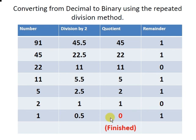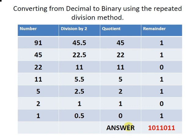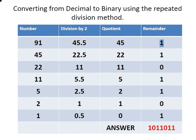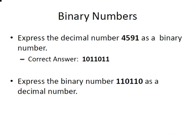This is where we are finished. When we get a quotient value of 0 there is nothing more to bring down to the next phase — that's when we know we have reached the last phase of the repeated division method. The answer is the remainder values read in reverse order, starting from the bottom and working up. So the binary result is 1011011.